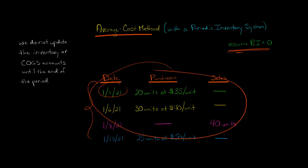So now given this series of transactions, what would be the cost of goods sold and the ending inventory for this company? That's what we're trying to figure out, and we're going to use the average cost method to do it.